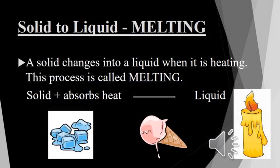The first process which changes the state of matter is melting. Melting can be defined as the change of a solid state of matter into a liquid state on heating. You can see in the given word equation that when a solid absorbs heat, it changes into a liquid. Melting ice cubes, melting ice cream, and melting candle wax are examples of this process. All these involve the absorption of heat.